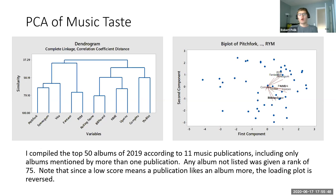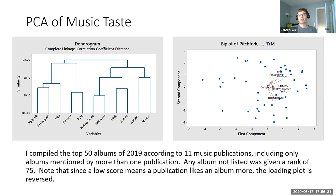Music data — I had so much fun doing this one. What I did was take from 2019 these 11 different publications and their top 50 lists, then use that to rank all the different albums and assign a score to each. If they ranked it number one, it got a score of one. The idea is you can't just take what a website scores something, because certain websites don't review certain albums — that represents the taste of that website. If a website doesn't review an album, what score does that mean — does it give it a zero, or does it give it two stars out of four?